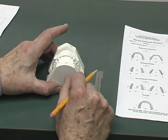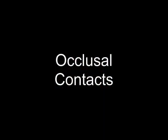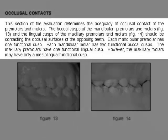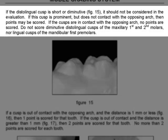Moving to the right side of the CR eval form, at the top of the column is the occlusal contacts parameter. This section determines the adequacy of occlusal contact of the premolars and molars. The buccal cusps of the mandibular premolars and molars and the lingual cusps of the maxillary molars and premolars should contact the occlusal surfaces of the opposing teeth. Each mandibular premolar has one functional cusp; each mandibular molar has two functional buccal cusps. The maxillary premolars have one functional lingual cusp; however, the maxillary molars may have only a mesiolingual functional cusp. If the distal lingual cusp is short or diminutive, it should not be considered in the evaluation. If this cusp is prominent but does not contact the opposing arch, then points may be scored.